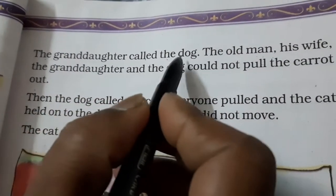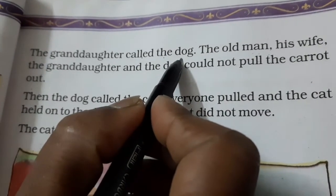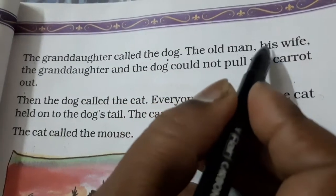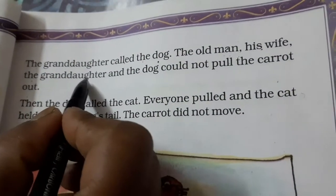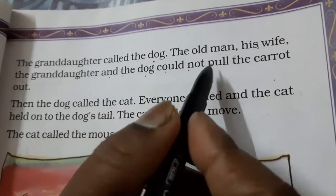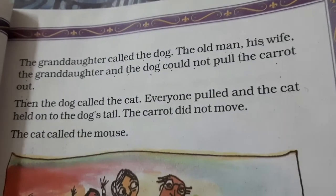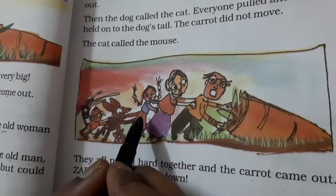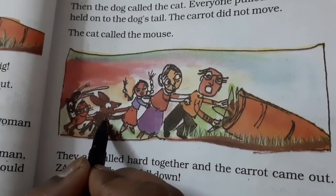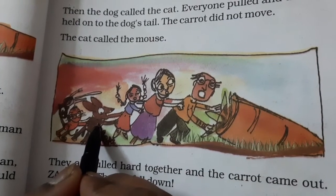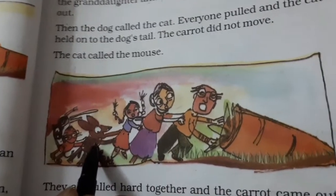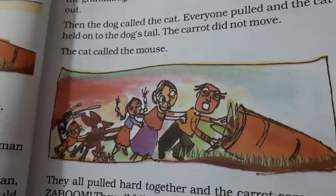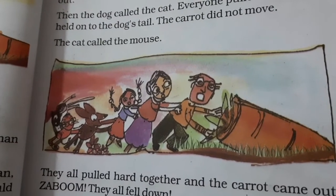The granddaughter called the dog — phir us ki poti ne apne pet dog ko bulaaya. The old man, his wife, the granddaughter and the dog could not pull the carrot out. Grand man, old man, old woman, granddaughter aur dog — woh chaaron milke karne lage phir bhi woh us ko bahar nahi nikaal paaye. Toh aaj hum itni hi story read karenge — next lecture mein hum aage ki story samjhenge. Theek hai, tab tak ke liye good bye.